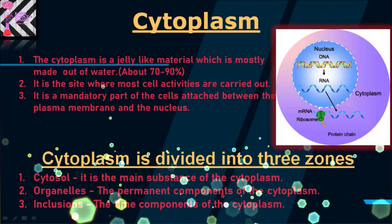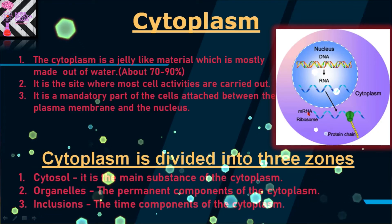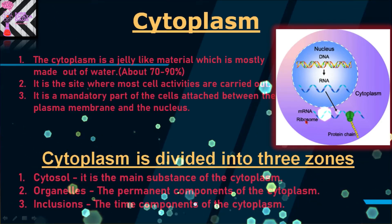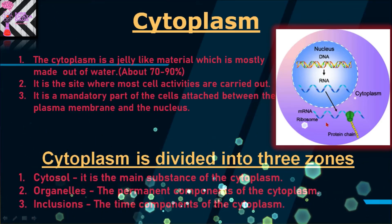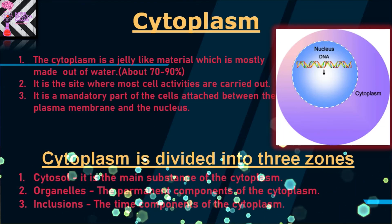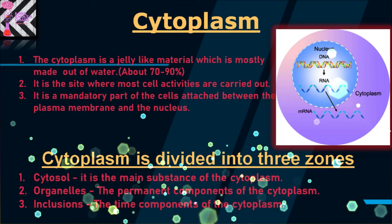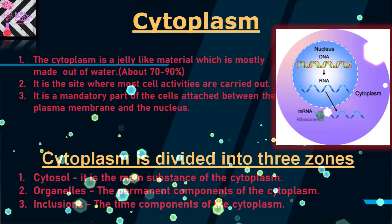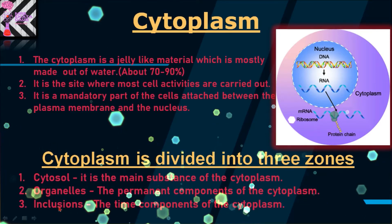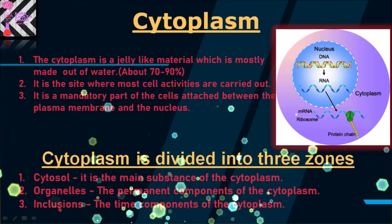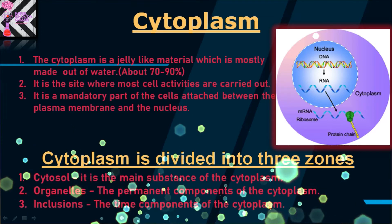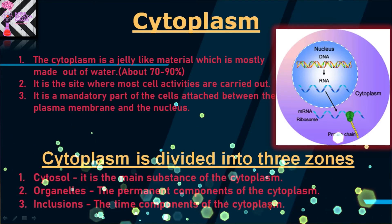The permanent components are certain organelles that exist continuously in every cell. Those permanent structures are called organelles. Next is inclusions — the temporary components of the cytoplasm. These components are formed in the cytoplasm as per requirement and they are known as inclusions.